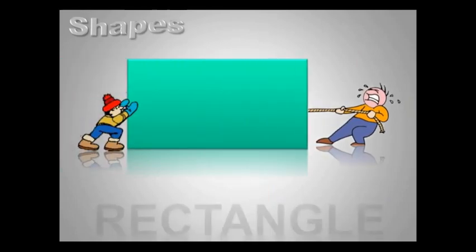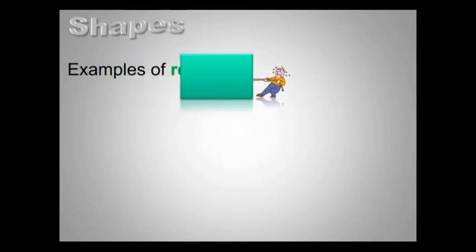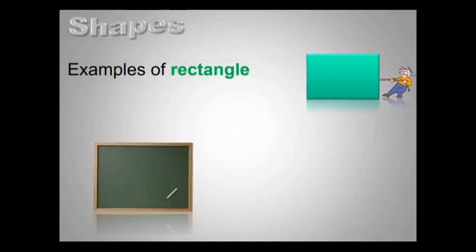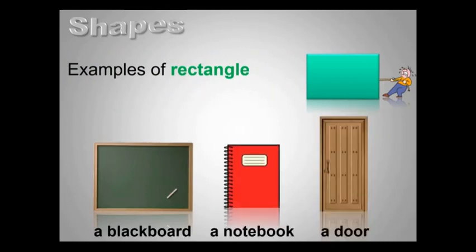This is a rectangle. A rectangle has two equal long sides and two equal short sides and four corners. A blackboard, a notebook, a door are all in the shape of a rectangle.